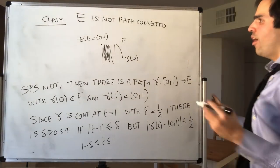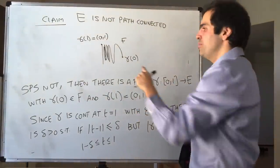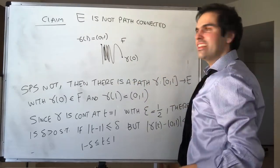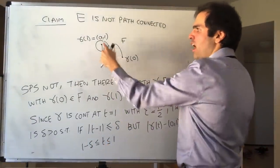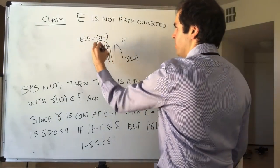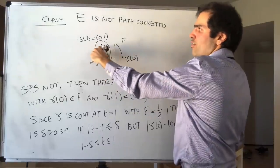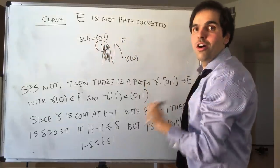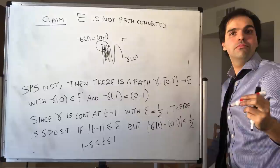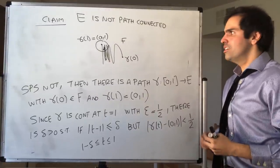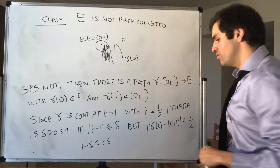We'll need this in a second. Also, if γ stayed on the line segment the whole time it would be boring and it would contradict γ(0) being in f. So it's okay to assume there are points between 1 − δ and 1 that are outside the line segment. Our strategy: continuity means that for t close to 1, all the γ(t) are in that little ball of radius 1/2. But that can't be, because there are points where γ has height minus 1 — and that's a contradiction. We're looking at points where sine(1/x) = −1.